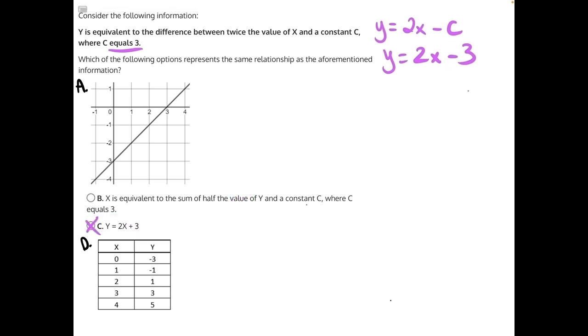If we look at answer choice b, we need to translate another sentence. x is equivalent to the sum of half the value of y, so half y, and a constant c. And we know c is equal to 3, so we can rewrite that as x is equal to 1 half y plus 3.